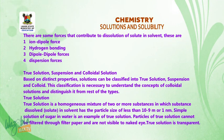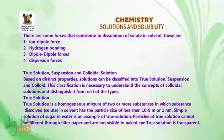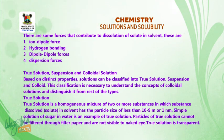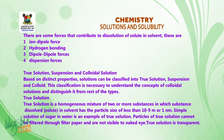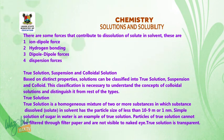Based on distinct properties, solutions can be classified into true solutions, suspensions, and colloids. This classification is necessary to understand the concept of colloidal solution and distinguish it from the other types. A true solution is a homogeneous mixture of two or more substances in which the dissolved substance (solute) in solvent has a particle size of less than 10⁻⁹ meter or one nanometer. A simple solution of sugar in water is an example of a true solution.